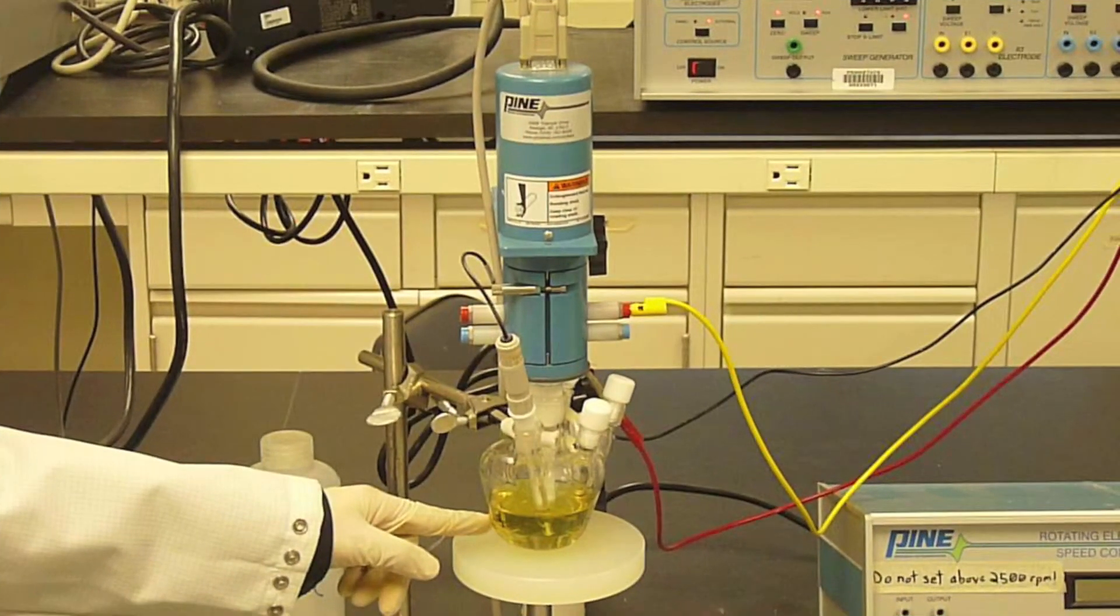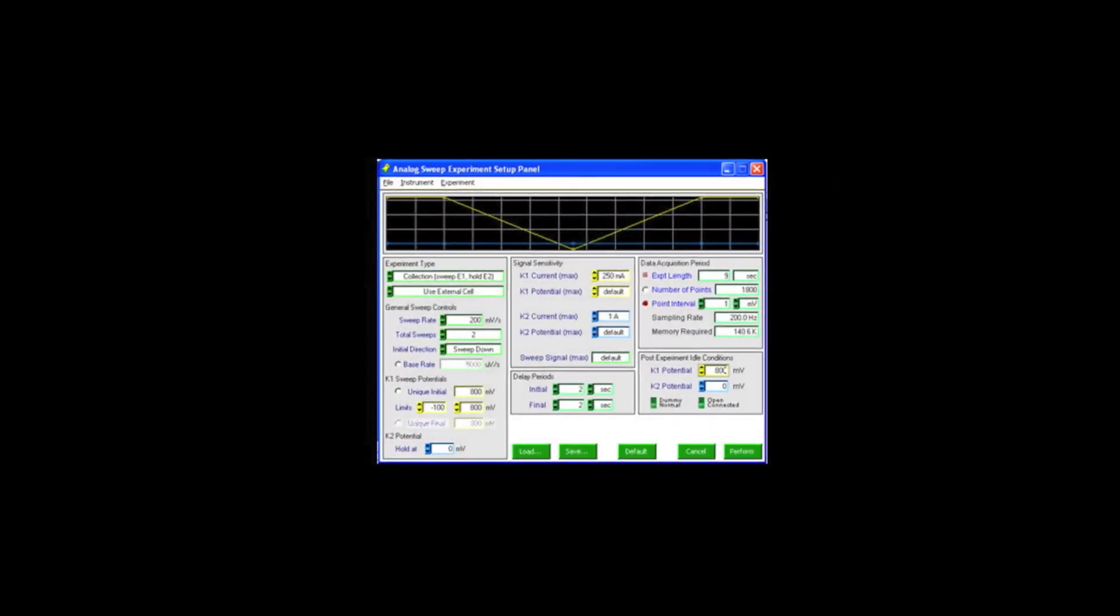With the background scan complete, replace the potassium nitrate solution with the potassium ferrocyanide solution and repeat the experiment. Re-check the bipotentiostat settings and readings. The bipotentiostat should again be in normal mode and the front panel voltmeter should again display the working electrode potential, E1, which should confirm the K1 electrode is idling near 800 millivolts.